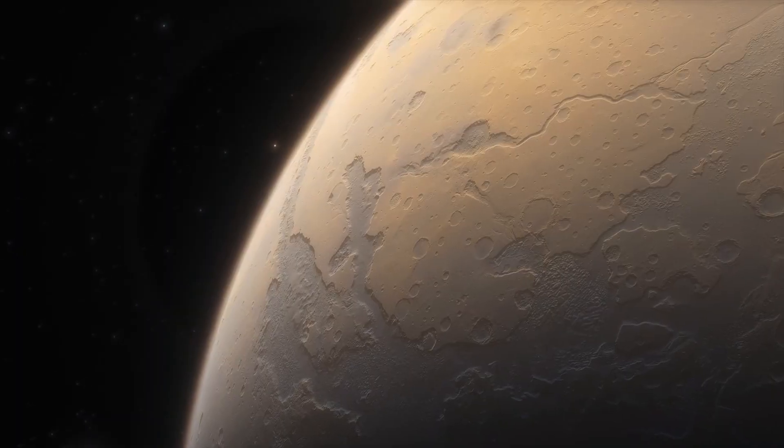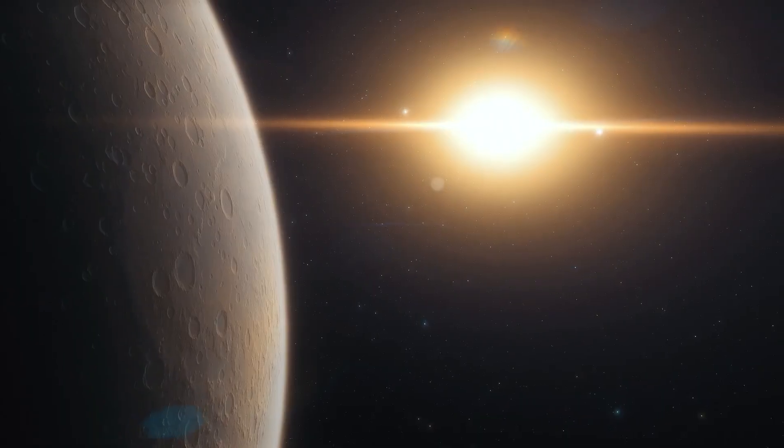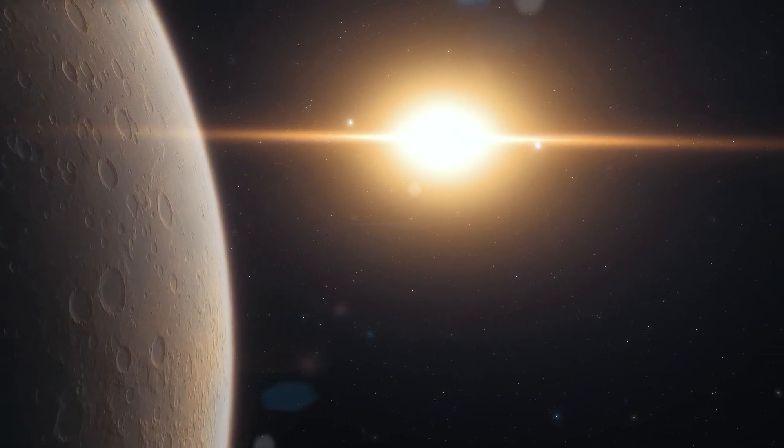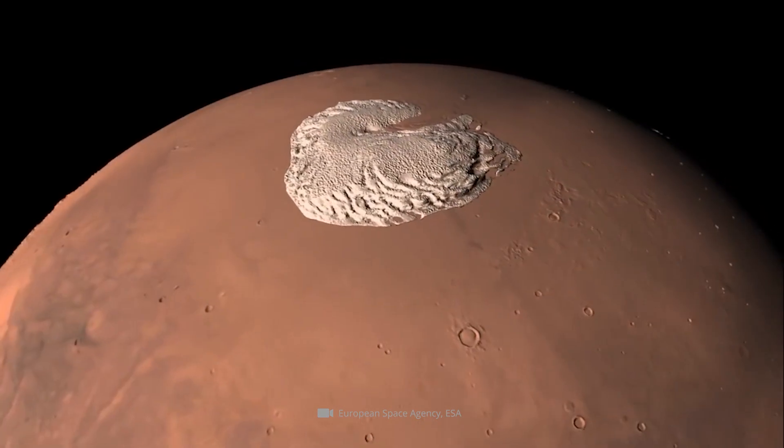Despite this, temporary liquid water accumulations could still form on Mars today. This would be the case in the summer months, when the incident solar radiation melts small amounts of the uppermost water ice layers.